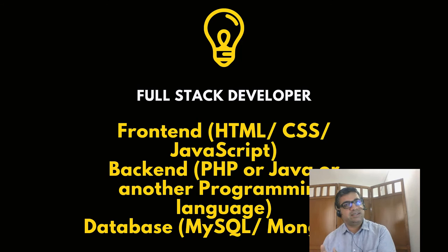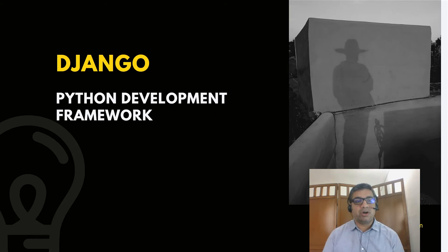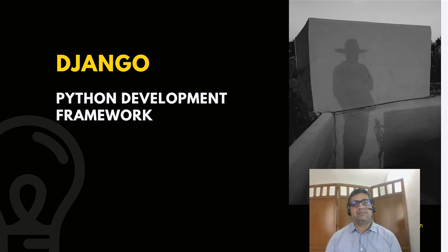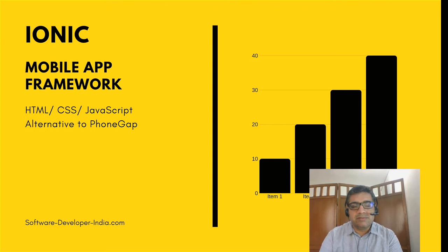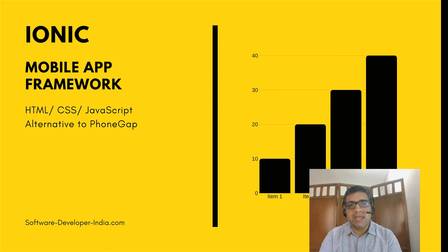Python also has a framework called Django — you should know it exists even though we won't go deeper here. There is also Ionic, a mobile app framework similar to PhoneGap that is based on HTML, CSS, and JavaScript. Ionic was popular a few years back before React Native and Flutter appeared, and you may still find it in some projects.